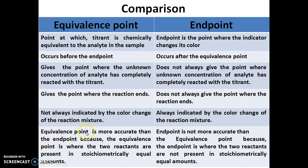Fifth, the equivalence point is more accurate than the end point because at the equivalence point the two reactants are present in stoichiometrically equal amounts. In contrast, the end point is not more accurate than the equivalence point because at the end point the two reactants are not present in stoichiometrically equal amounts. This is the main difference between equivalence point and end point. Thank you.